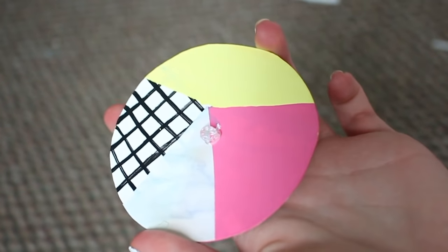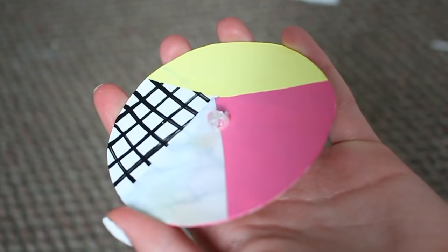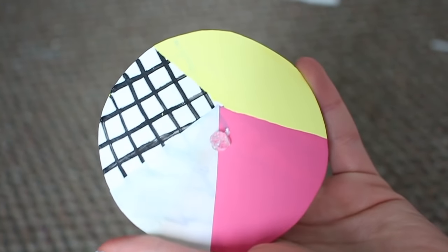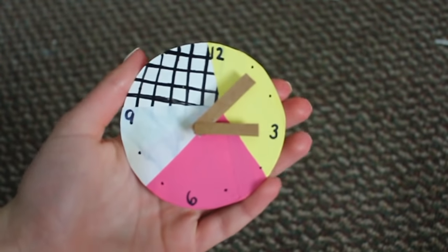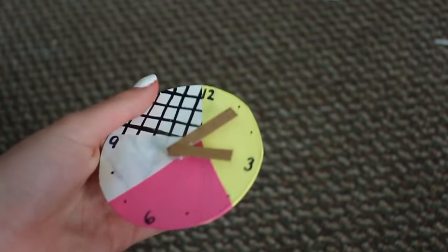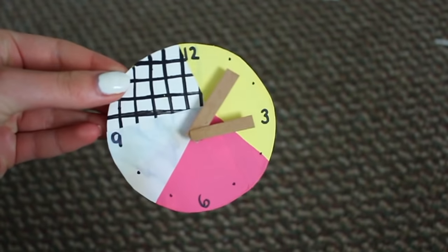And then I took a bead and I glued it right in the center with some hot glue. And for the hands of the clock, I used some thin cardboard and hot glued that on. And then I also wrote some numbers with a black Sharpie to make it look a little bit better.